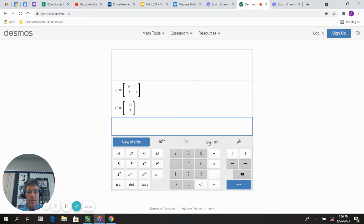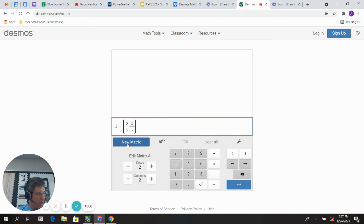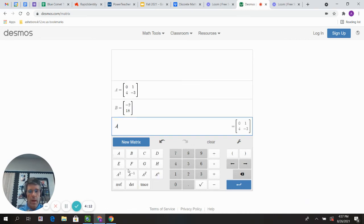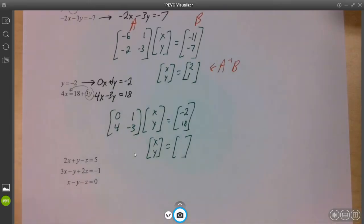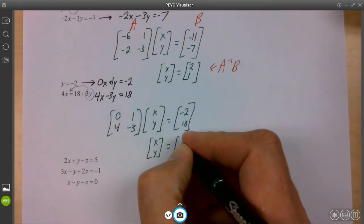So zero, one. Don't be afraid to put a zero to hold something's place. That's what zeros are for. Four, negative three, negative two, eighteen. There we go. Final answer is X and Y, and that is equal to something. I don't know what that is. We'll find out right now. Let's clear what we have and clear all.